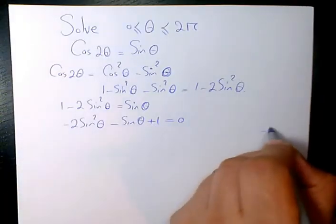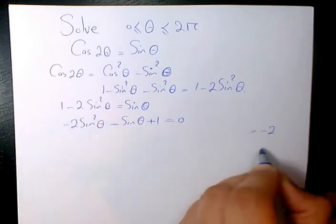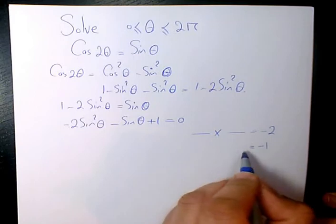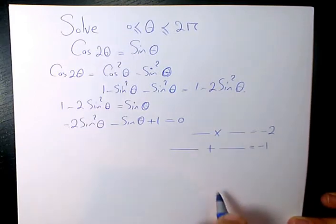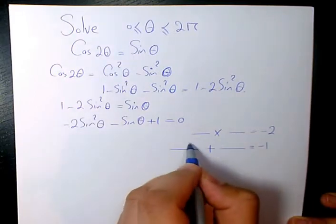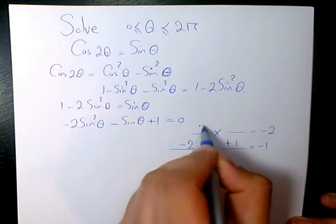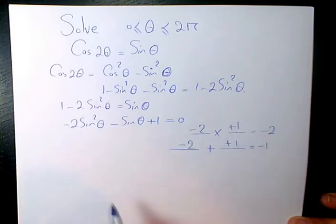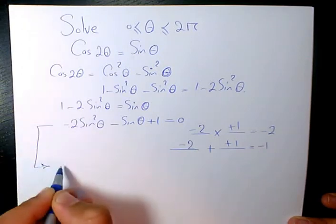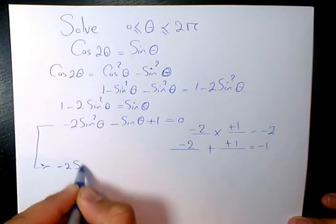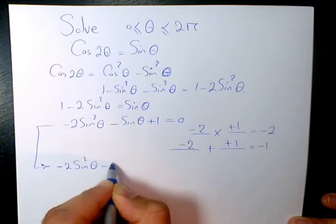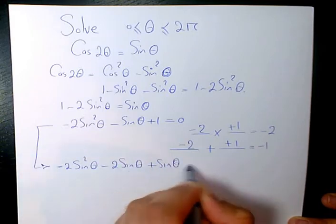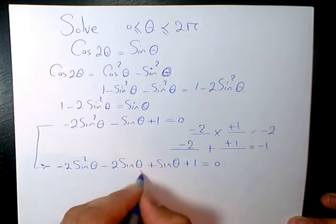A times C is going to be negative 2, and when you add them, it's going to be negative 1. So these two multiply each other, it's going to be negative 2, and when you add it, it's negative 1. So then we have negative 2 sine squared theta minus 2 sine theta plus sine theta plus 1 equals 0.